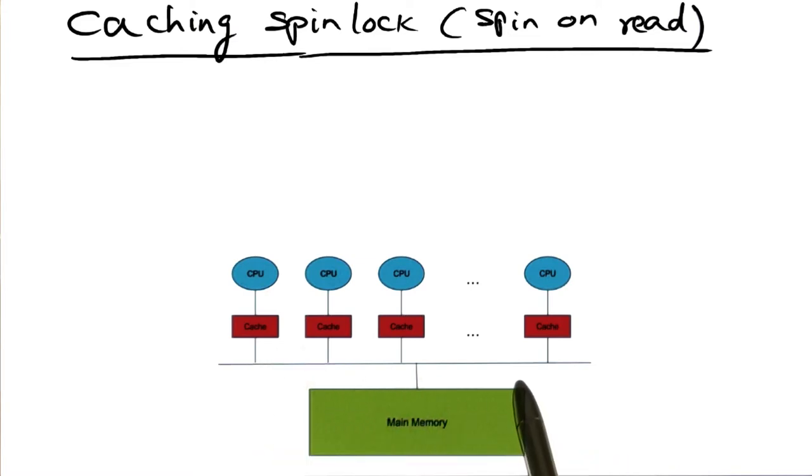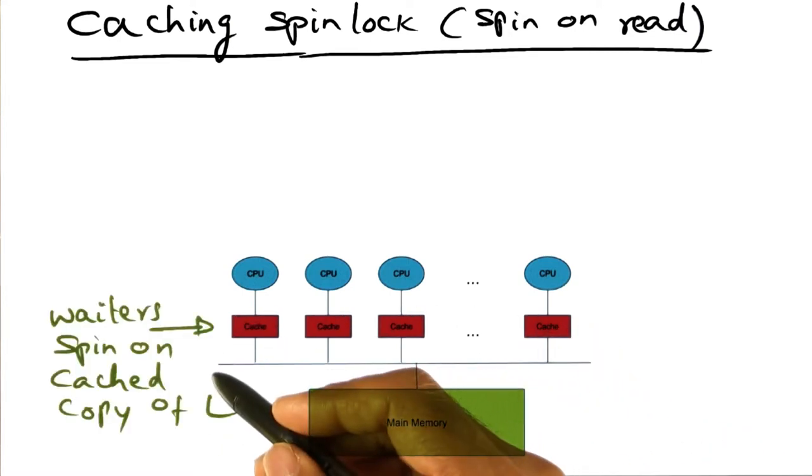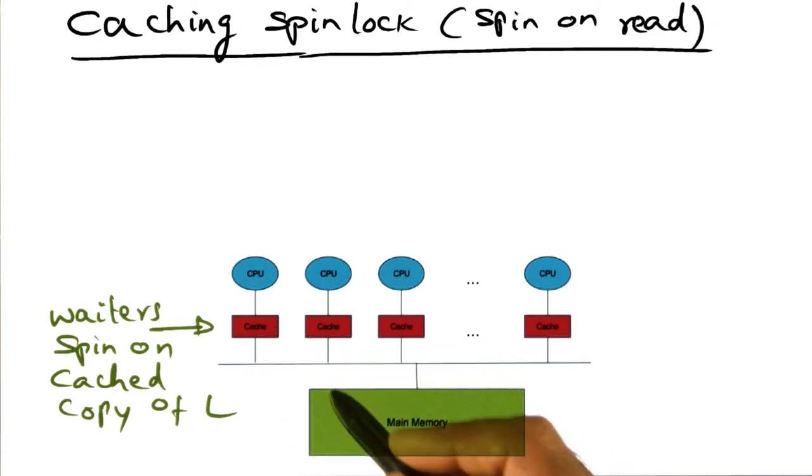So in other words, through the system bus or the interconnection network, the hardware is ensuring that the caches are kept coherent. Well, that gives us an idea as to how we can exploit the caches.